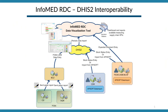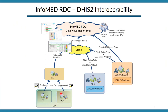Regarding data transfer: at the lowest level, facilities submit paper reports to districts. District staff with computers enter data into DHIS2 monthly LMIS reports. District, regional, and central warehouses also enter data directly into DHIS2. These data along with other sources are periodically sent to the InforMed platform where data visualization happens. The LMIS data entry page in DHIS2 includes fields for stock management: opening balance, received, issued, dispensed, and so on.